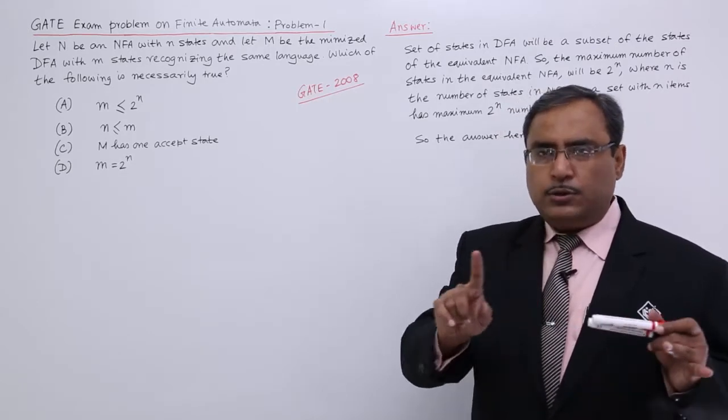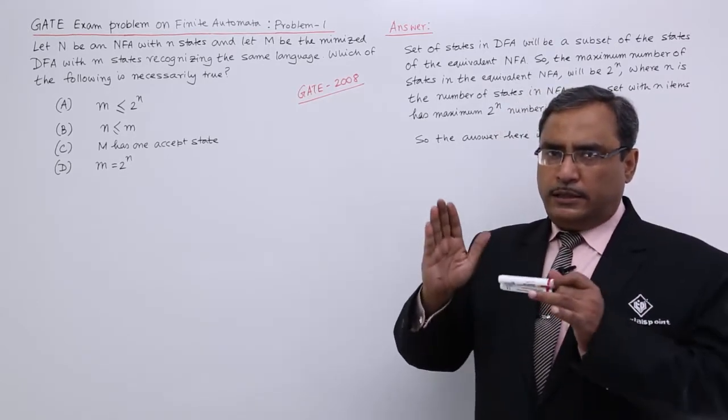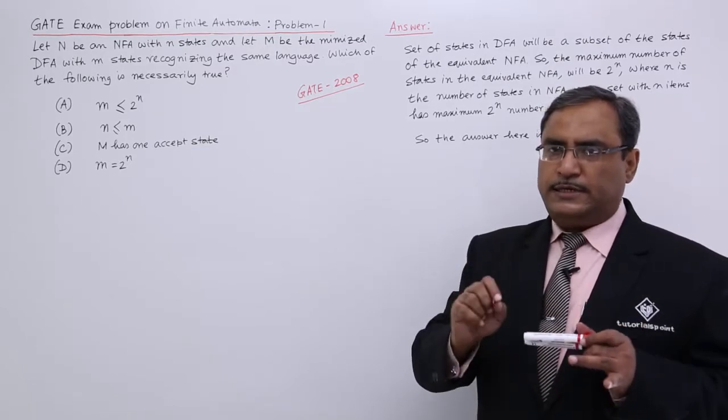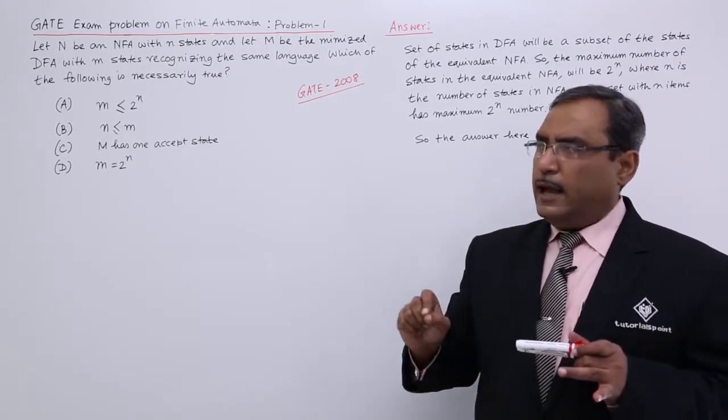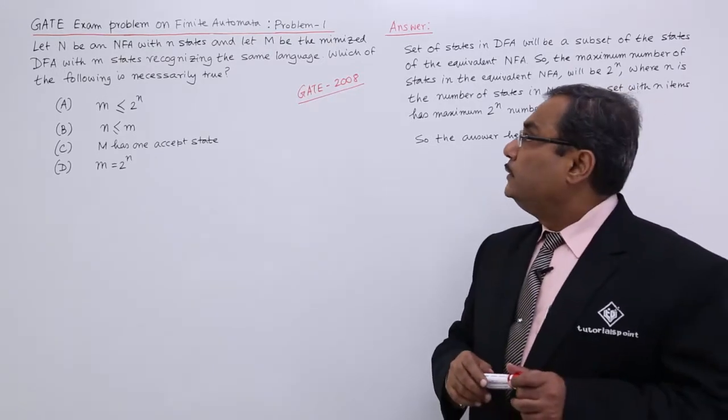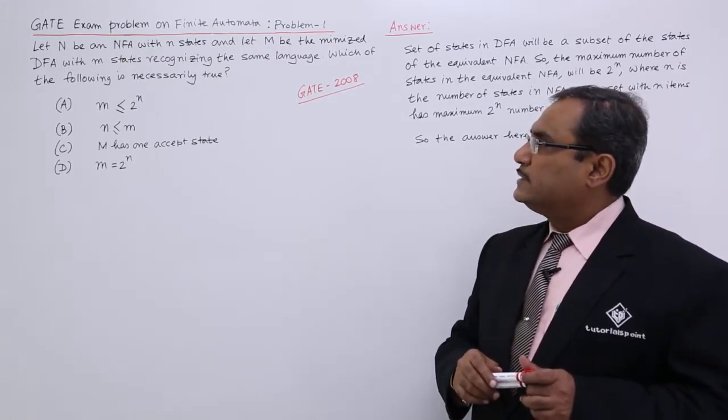Ultimately they have done NFA to DFA conversion and the DFA is minimized. NFA is having number of states is equal to small n and DFA is having the number of states is equal to small m. Which of the following is necessarily true?